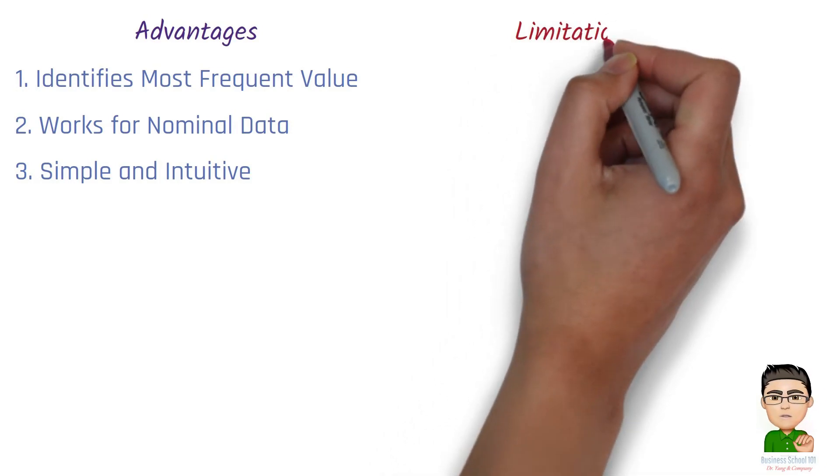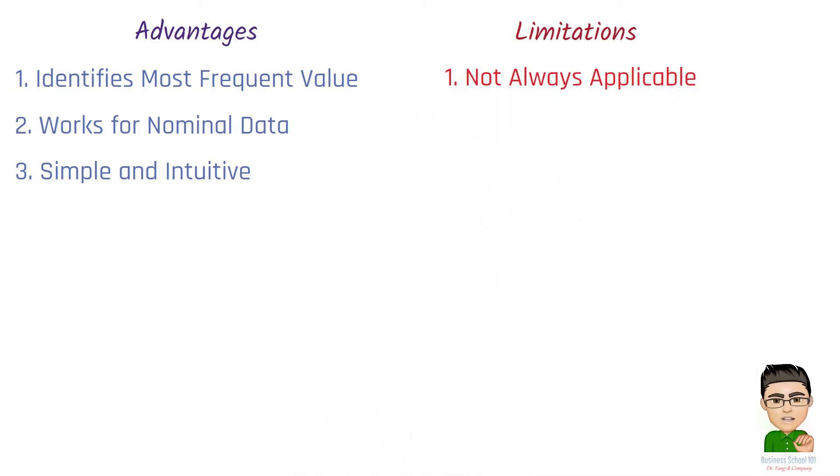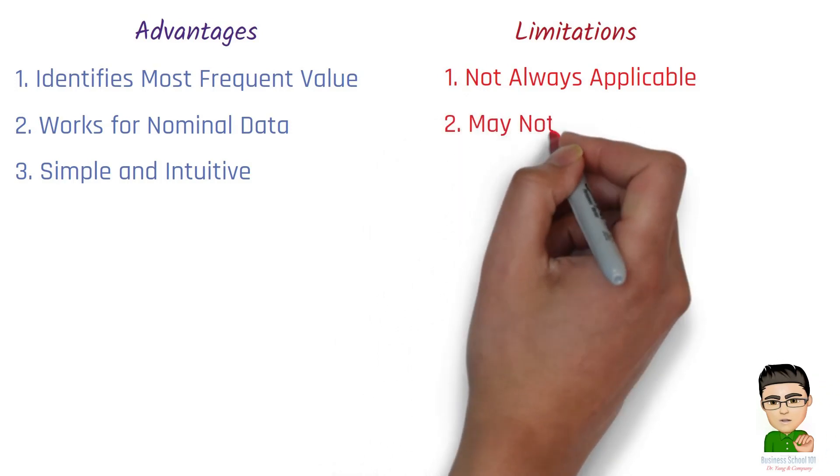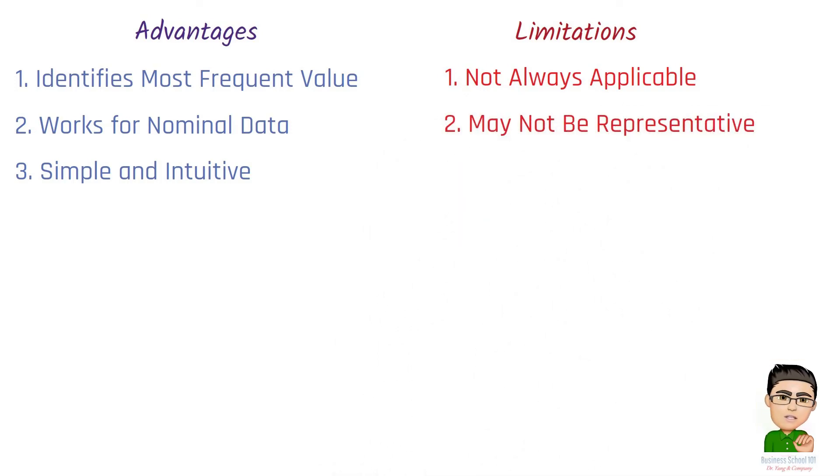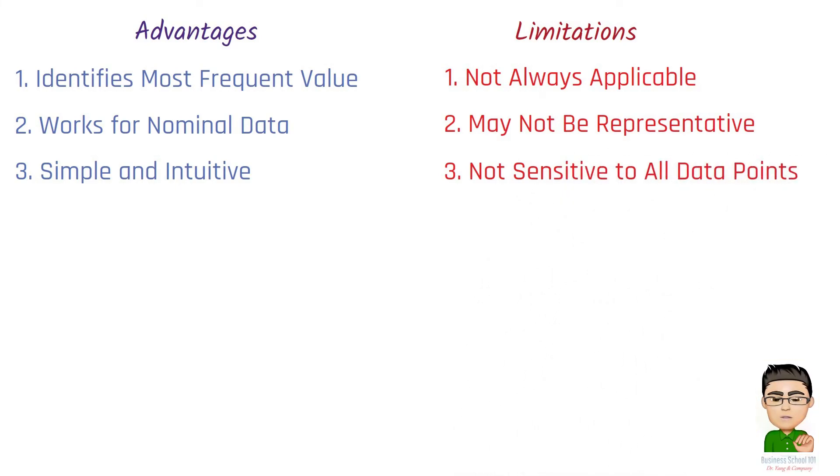Limitations of mode include: Number 1, Not always applicable. Some datasets have no mode, all values are unique, or they may have multiple modes. Number 2, May not be representative. The mode may not represent the overall distribution well, especially in cases where the most frequent value is an outlier. Number 3, Not sensitive to all data points. Like the median, the mode doesn't use all data values, potentially leading to information loss.